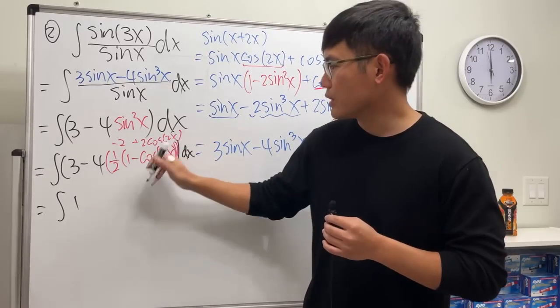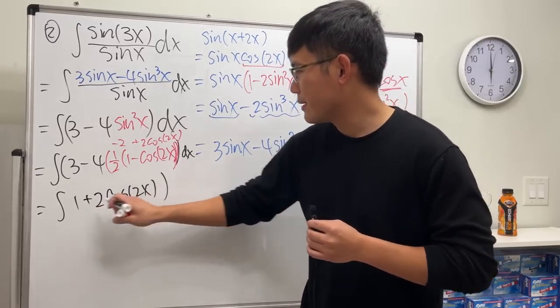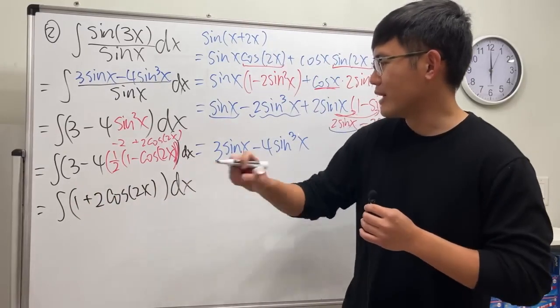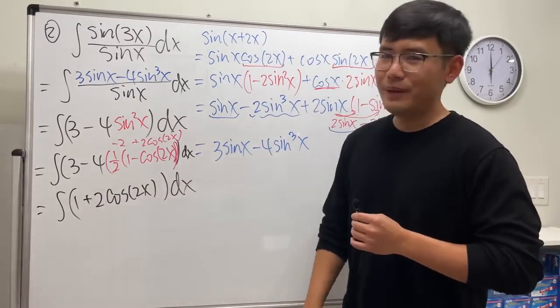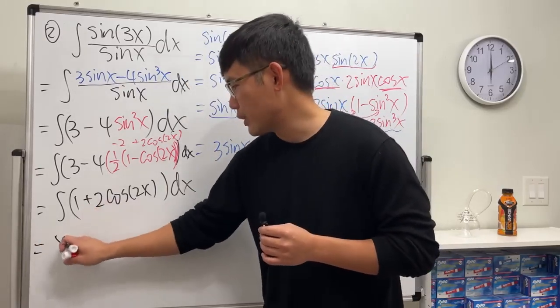So we have 1 plus 2 cosine of 2x, parentheses because people want me to do that. All right, now we can integrate. But the first one is of course just x because we're in the x world.